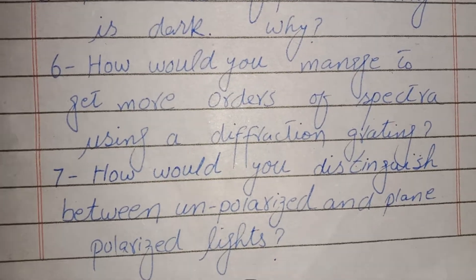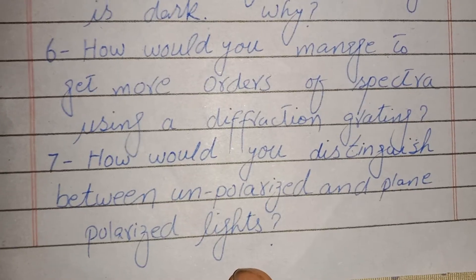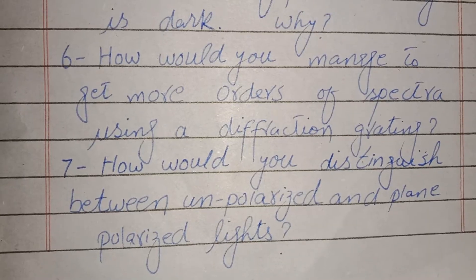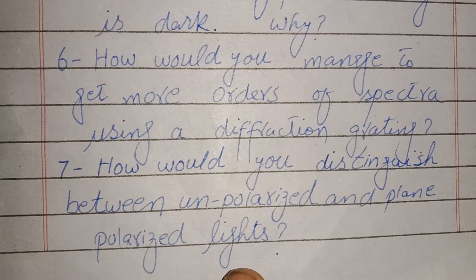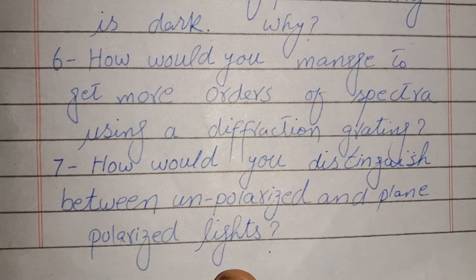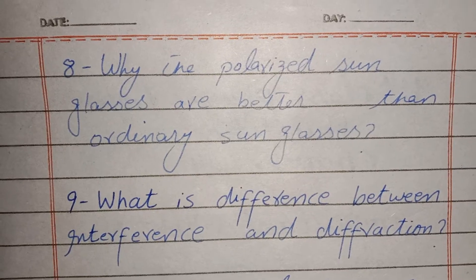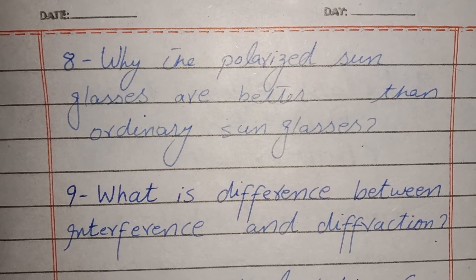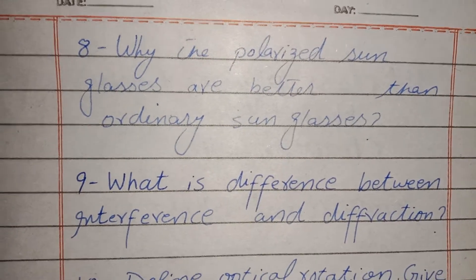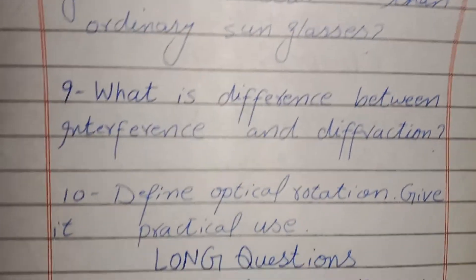How would you get more orders of spectra using a diffraction grating? How would you distinguish between unpolarized and plane polarized light? Why are polarized sunglasses better than ordinary sunglasses? What is the difference between interference and diffraction?